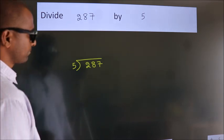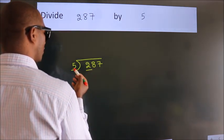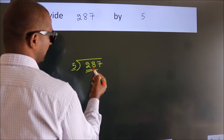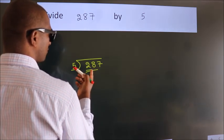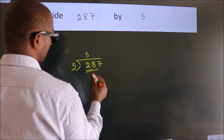Next, here we have 2, here 5. 2 is smaller than 5, so we should take 2 numbers: 28. A number close to 28 in the 5 table is 5 times 5 equals 25.